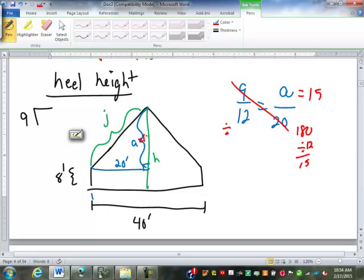So A is 15 feet. Which makes H 15 plus 8. This would be 8 inches, not 8 feet. So that makes that 15 feet 8 inches.